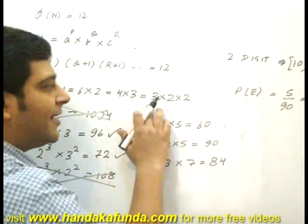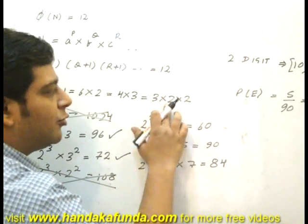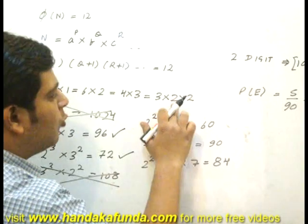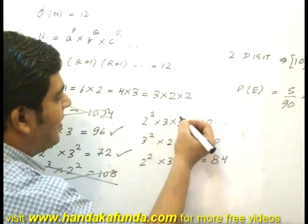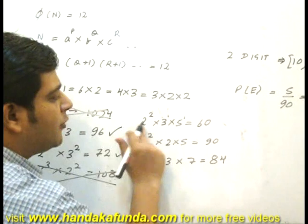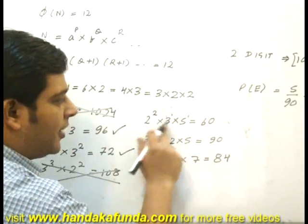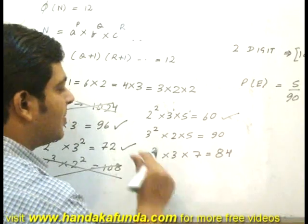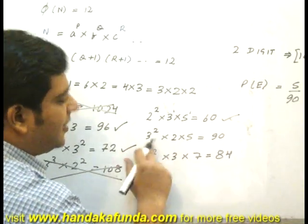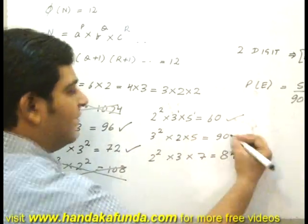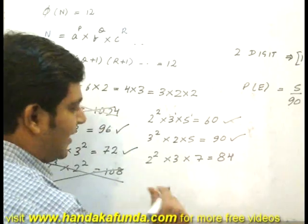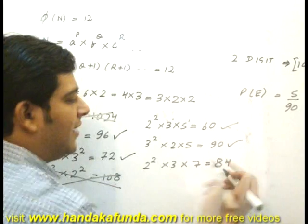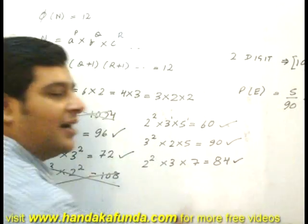Next case, 12 can be expressed as 3 into 2 into 2. That means powers 2, 1 and 1. I can get 2 square into 3 into 5, that's 4 into 3, 12 into 5, 60. Valid answer. 3 square into 2 into 5, 9 into 2, 18 into 5, 90. Valid answer. 2 square into 3 into 7, 4 into 3, 12 into 7, 84. Again a valid answer.